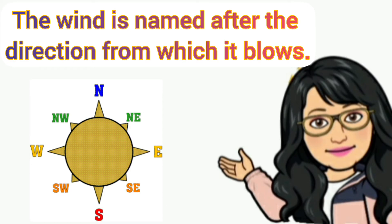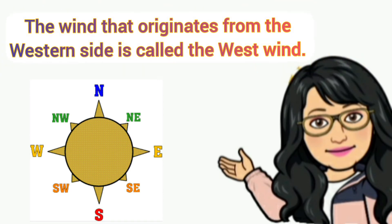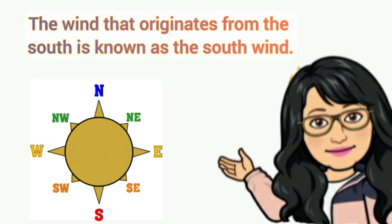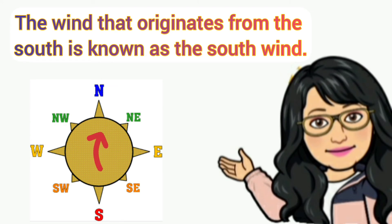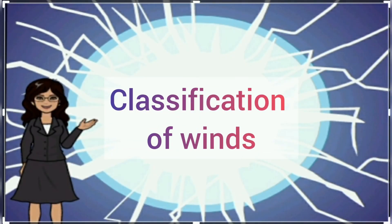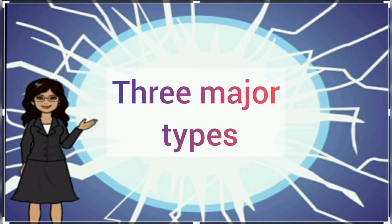The horizontal movement of air is known as wind. The wind is named after the direction from which it blows. For example, the wind that originates from the western side is called the west wind. Similarly, the wind that originates from the south is known as the south wind. Winds can be broadly classified into three major types.